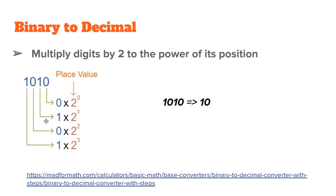we have 0 multiplied by 2 to the power of 0. Then 1, this is in position 1. So, we have 1 multiplied by 2 to the power of 1. Then 0, which is multiplied by 2 to the power of 2. And finally 1, which is multiplied by 2 to the power of 3.